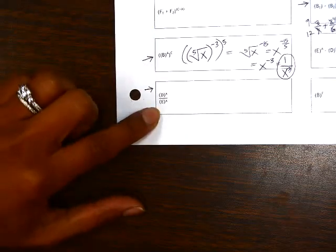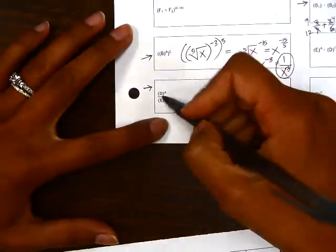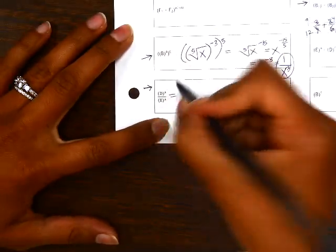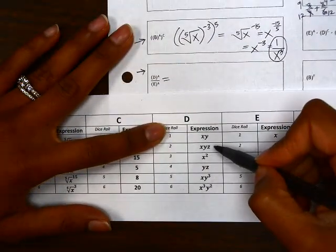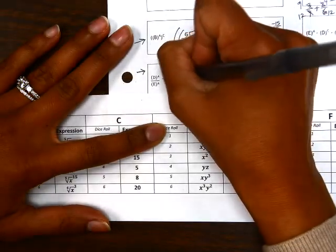The last example I'm going to do is this one here: d to the a over e to the a. So I'm going to pick an expression from problem set d. For example, I'm just going to use this first one, x, y.